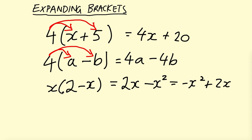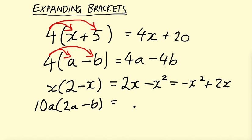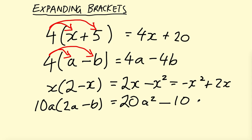You can also have an unknown with a coefficient at the front, like 10A, and then brackets containing another unknown — say 2A minus B. So 10A times 2A: multiply the numbers first to get 20, and A times A gives A squared, so 20A squared. Then 10A times minus B gives minus 10AB.